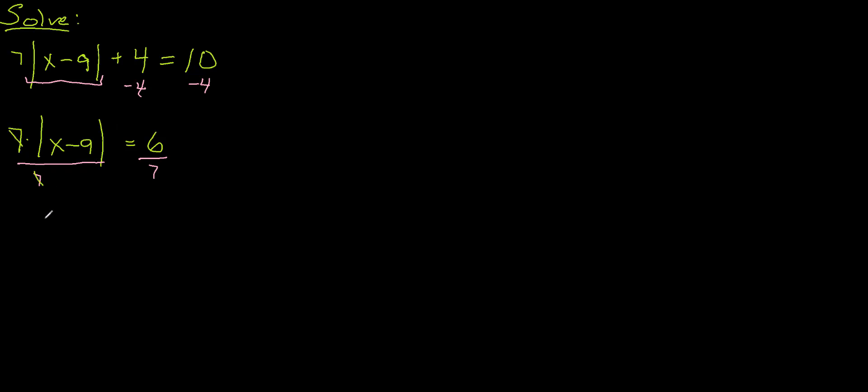On the left hand side I'm left with |x - 9| and on the right hand side 6/7. And I'm going to leave it as a fraction. I don't want to write that as a decimal or try to round it off in the middle of my problem because that will introduce rounding errors.